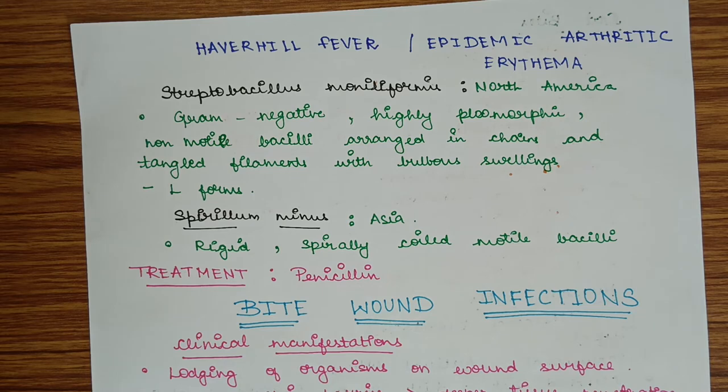Streptobacillus moniliformis is found in North America. It is gram negative, highly pleomorphic, and non-motile bacilli arranged in chains and tangled filaments with bulbous swellings. L-forms are seen.